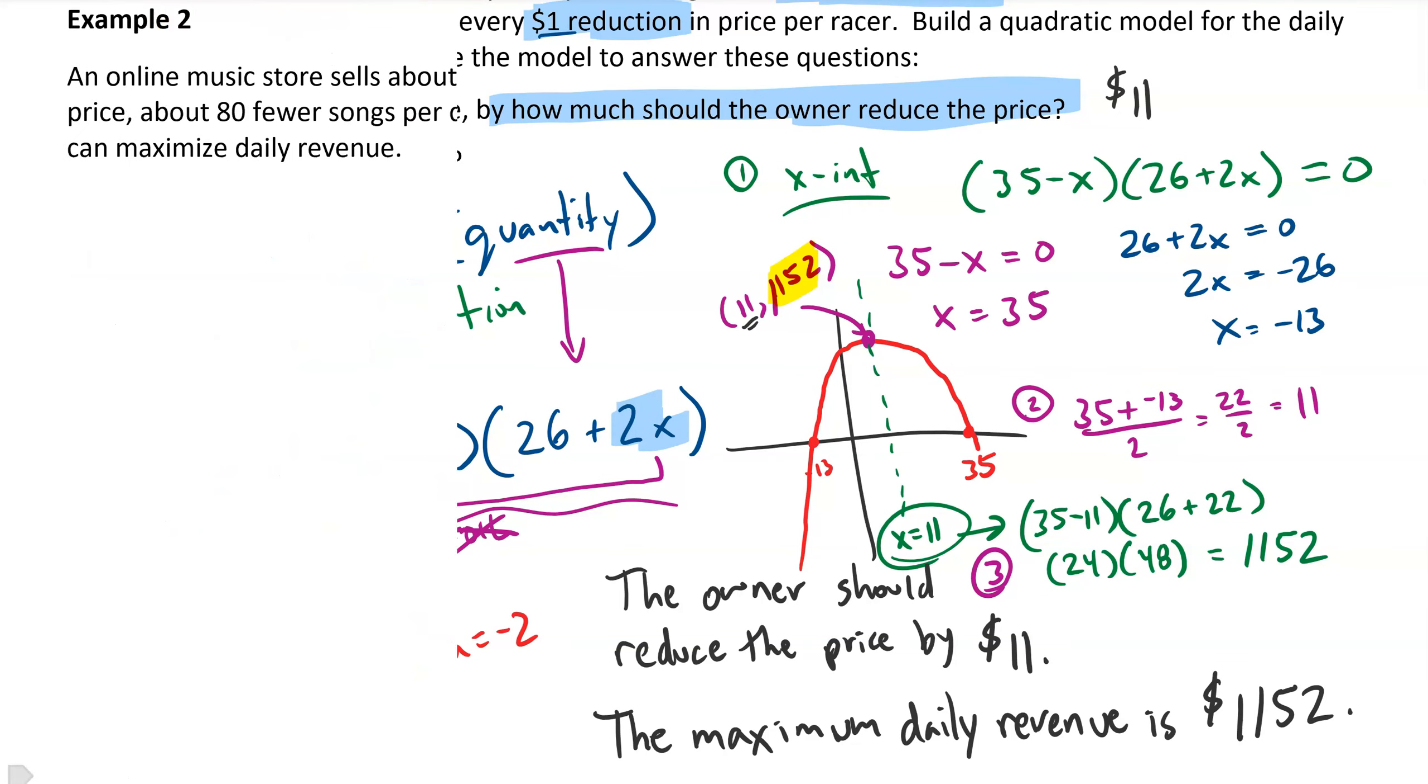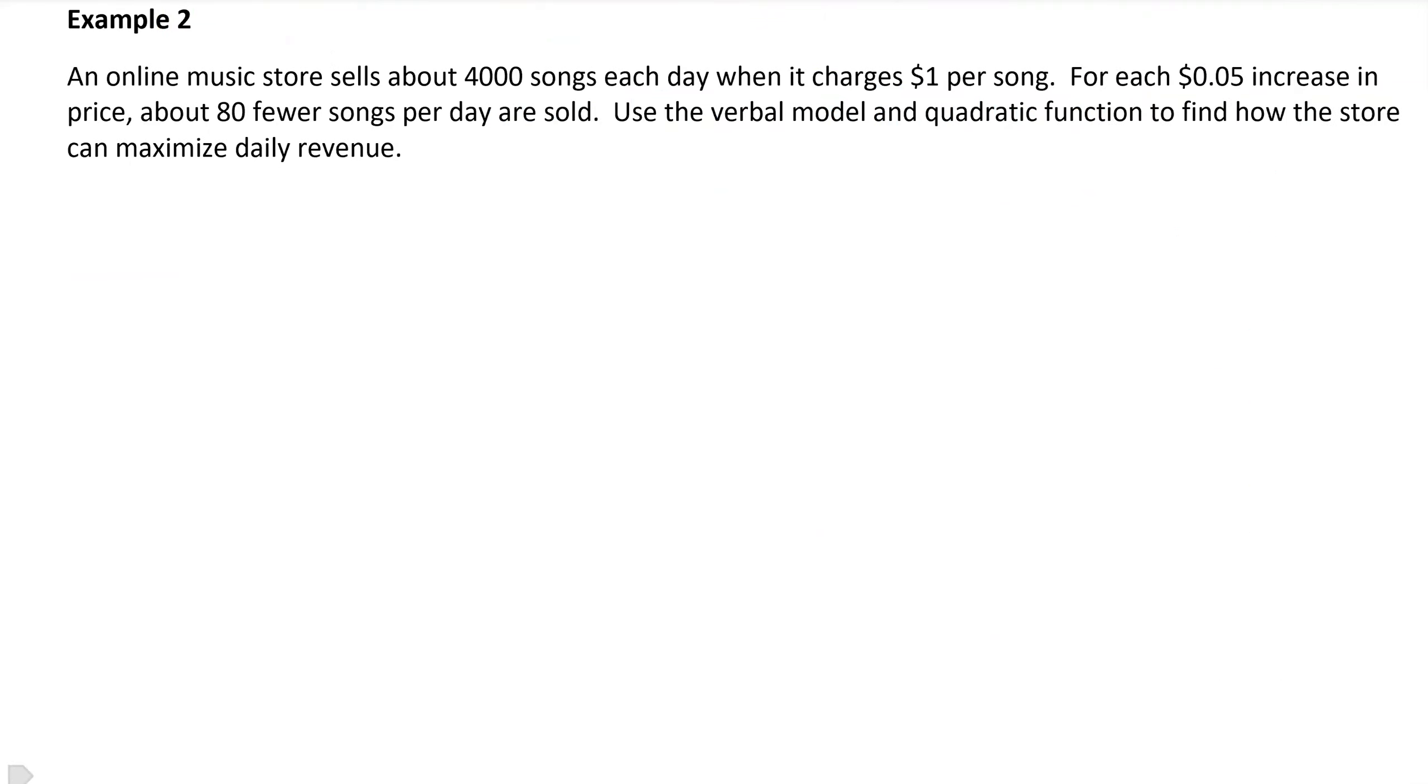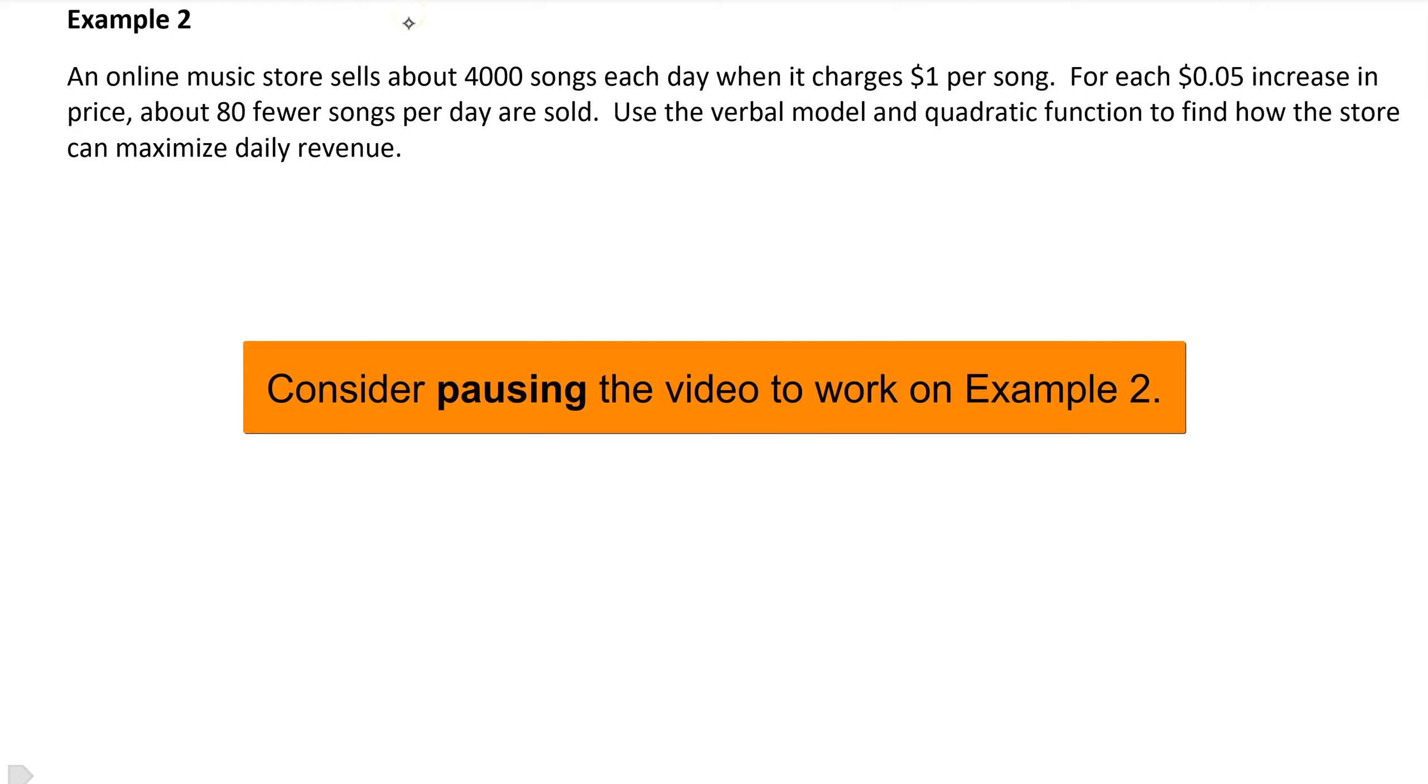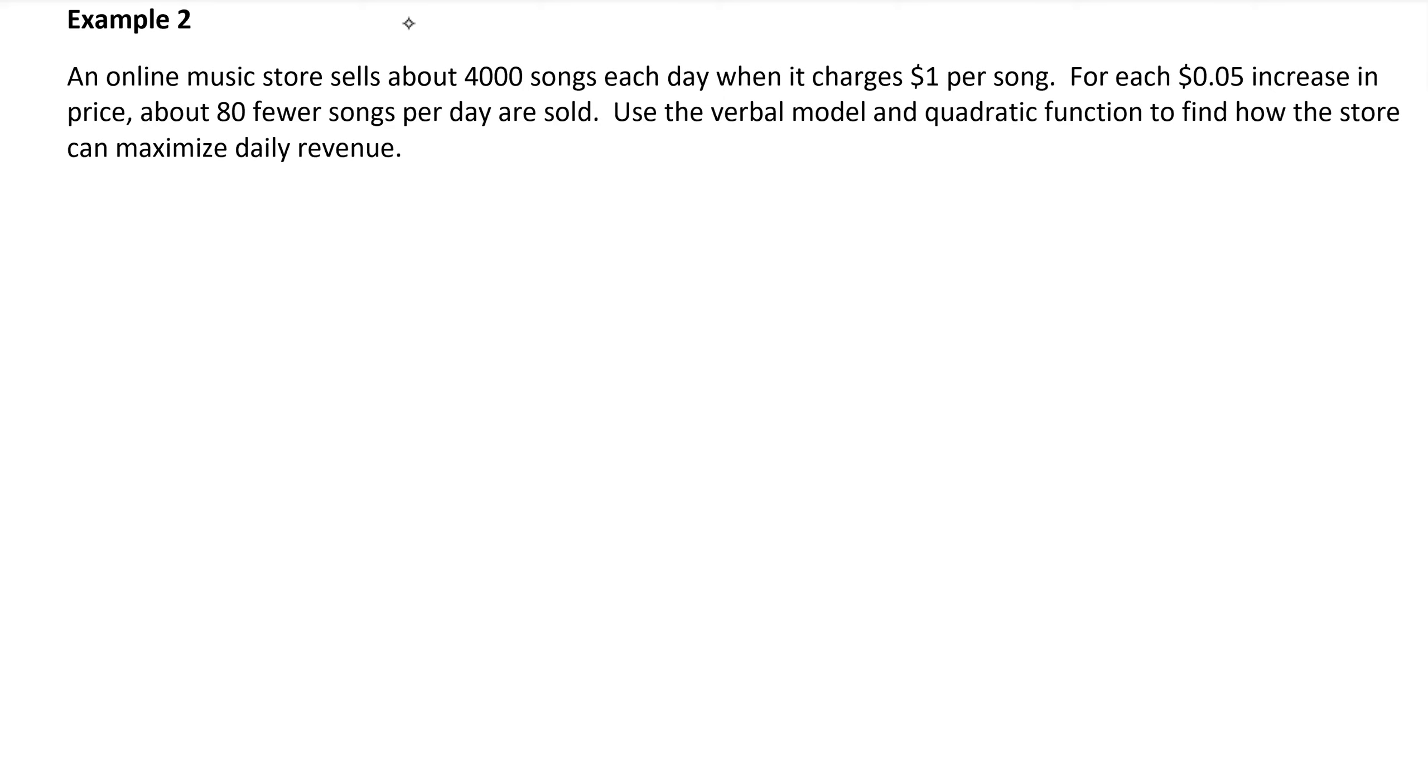Let's look at a second example that's somewhat similar. You might want to pause the video and work on this example on your own first, and then check your work. This time, we have an online music store that sells about 4,000 songs each day and charges $1 per song. If they increase the price by 5 cents, they expect about 80 fewer songs to be sold. So we want to create a quadratic model and find out how the store can maximize their daily revenue.